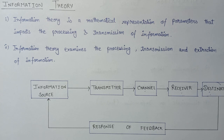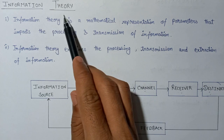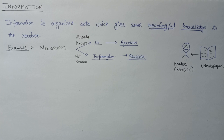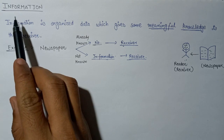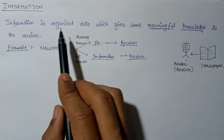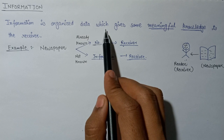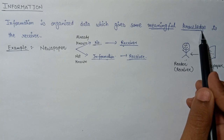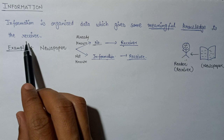This is the basic introduction to information theory. Information is an organized data which gives some meaningful knowledge to the receiver.